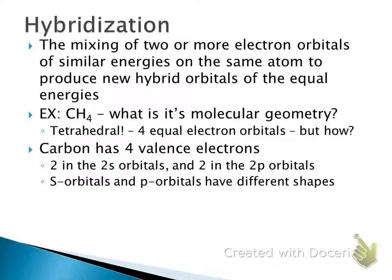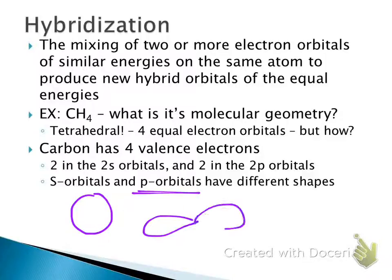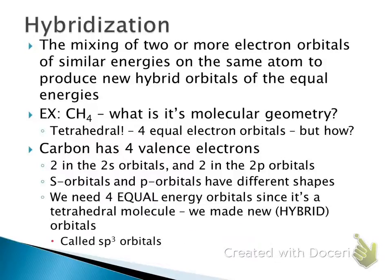The s orbitals and p orbitals have different shapes. The shape of an s orbital is just a circle, and a p orbital is like an hourglass or a dumbbell around the central atom. Since they have different shapes, but we know CH4 is tetrahedral with four completely identical electron orbitals, we need equal-energy orbitals. So we combine those s and p orbitals into one new type called a hybrid orbital.